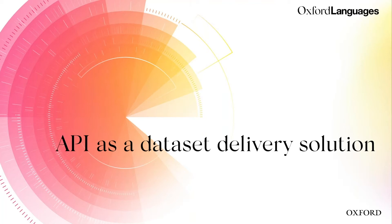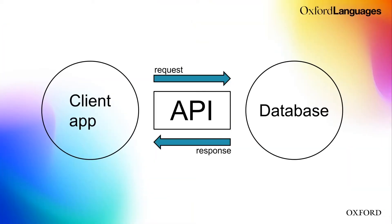Before we get deeper into the Oxford API, I wanted to quickly recap what an API is and why it's so clever as a delivery mechanism. An API, in a jargon-free definition, is a technology that allows different software, databases, and applications to talk to each other and share data. In the case of this diagram, a client app might send a request to a database and the database sends a response to the client app.